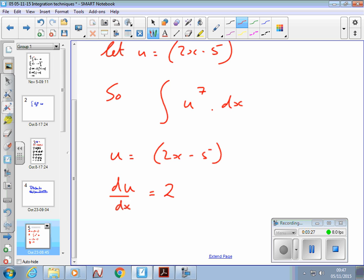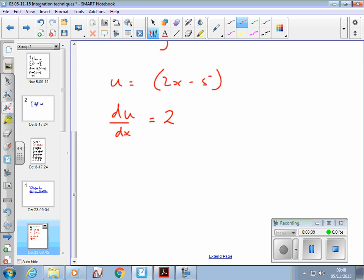We're differentiating u. Why? Good question. I'm going to show you why now. If I differentiate it, now what I do is I rearrange this for dx. So if I multiply both sides by dx, I get du equals 2 dx. And if I divide both sides by 2, I get dx equals du over 2.